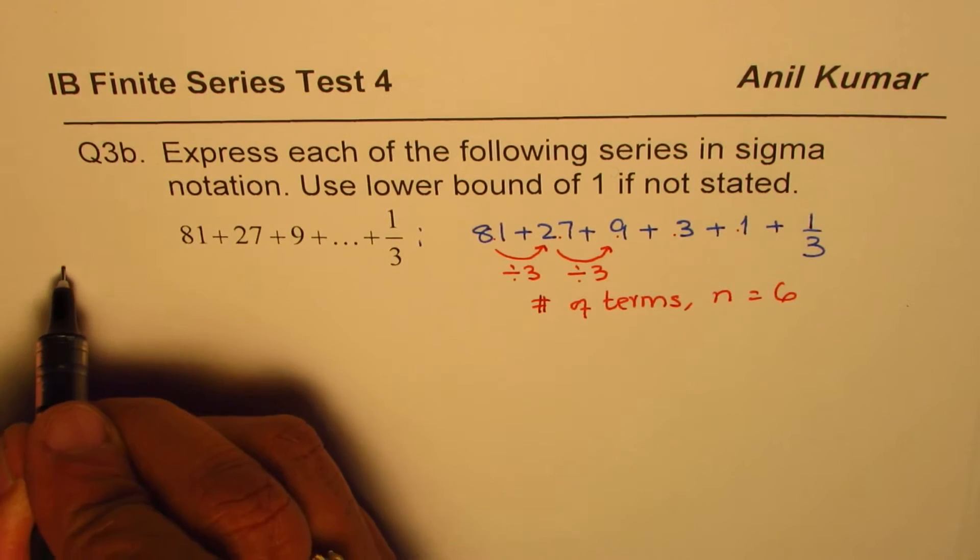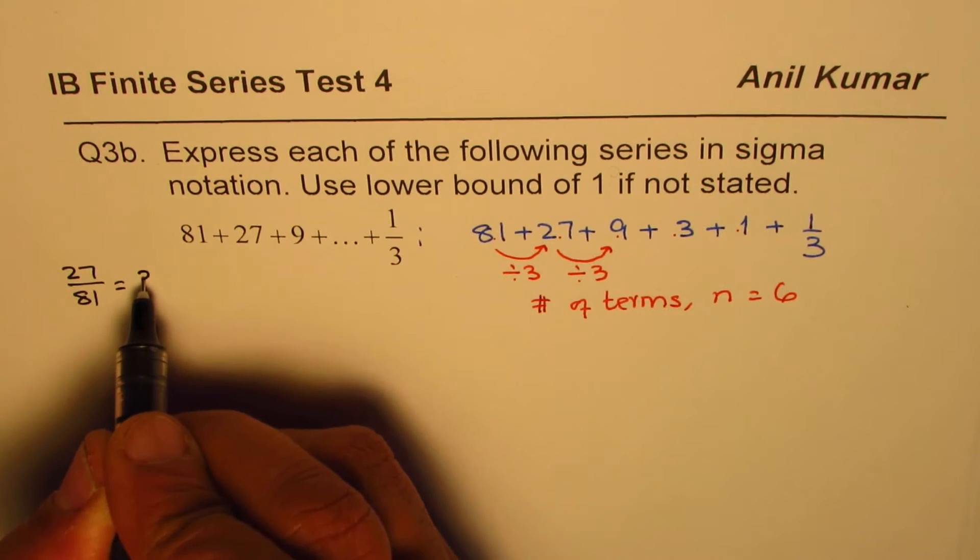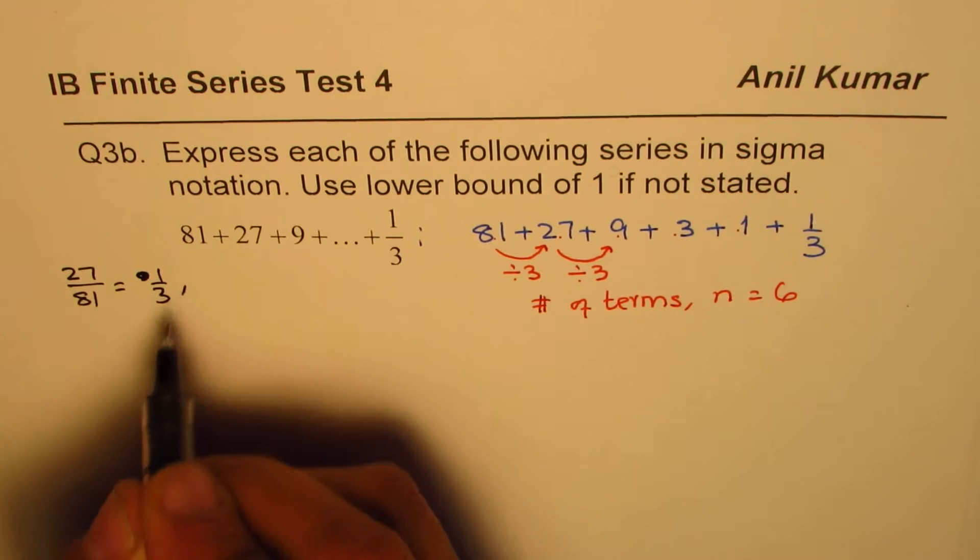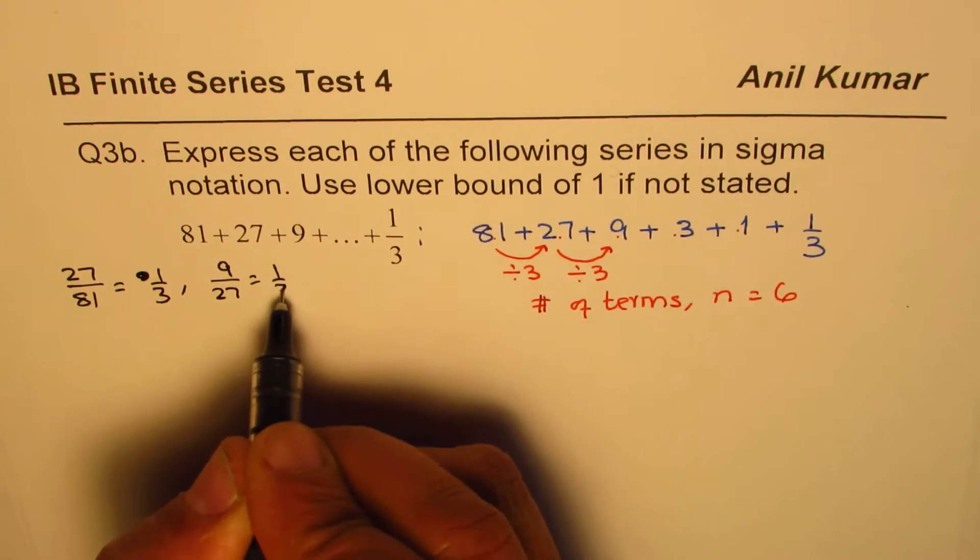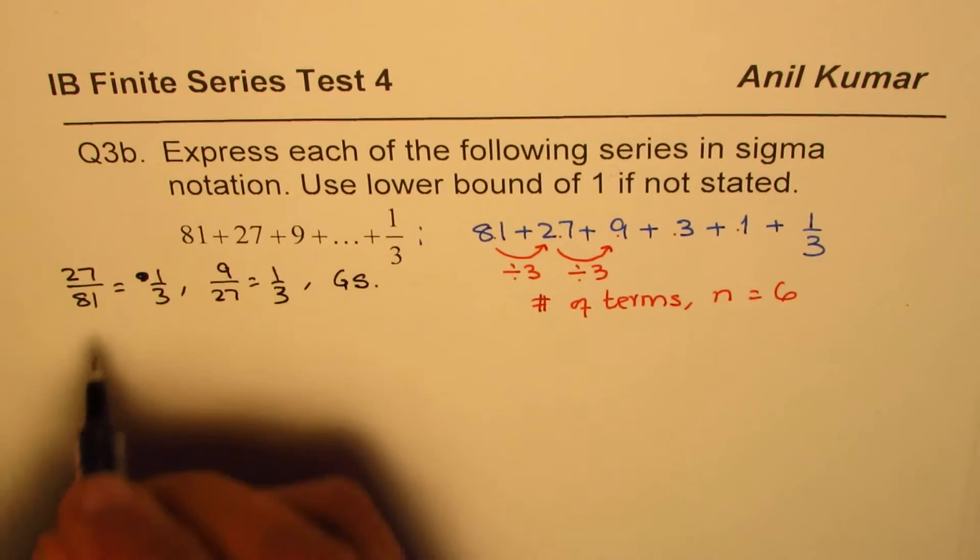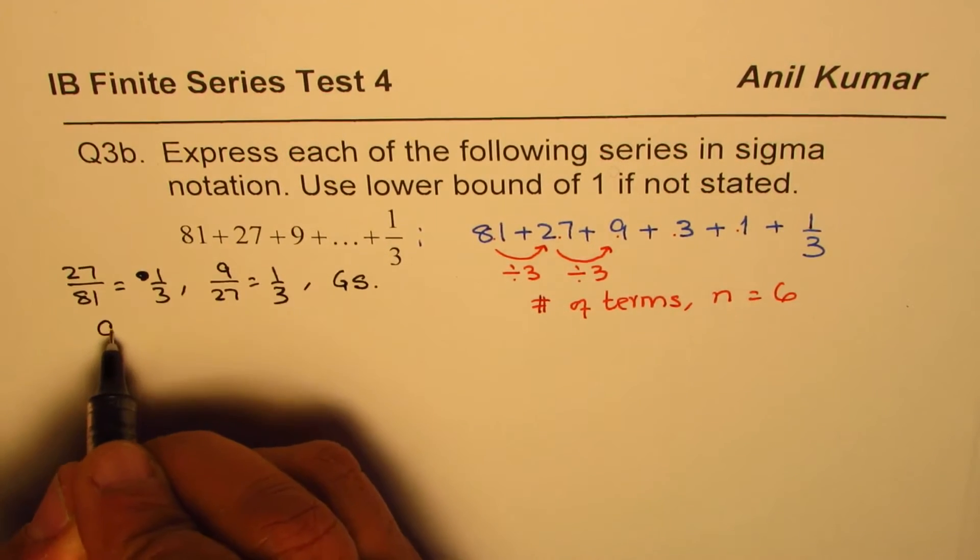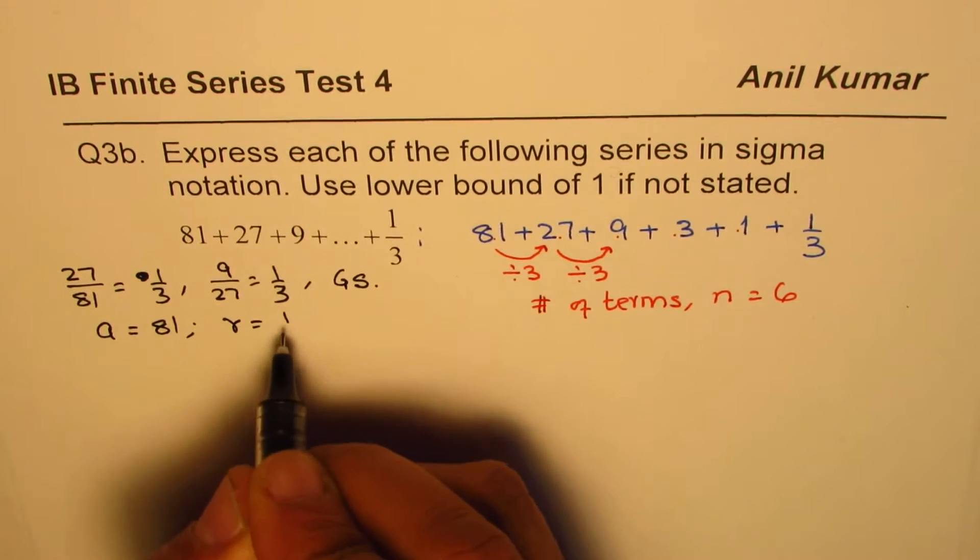Since we realized that 27 over 81 equals 1 over 3 and 9 over 27 is also 1 over 3, we say it is a geometric series. In this geometric series, the first term a is 81 and r is 1 over 3.